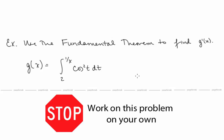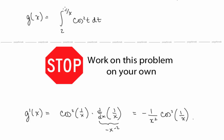Use the fundamental theorem to find g′(x), where g(x) = ∫₂^(1/x) cos²(t) dt. We plug 1/x in for t and multiply by the derivative of 1/x, which is −x⁻² = −1/x². So g′(x) = −(1/x²) cos²(1/x).